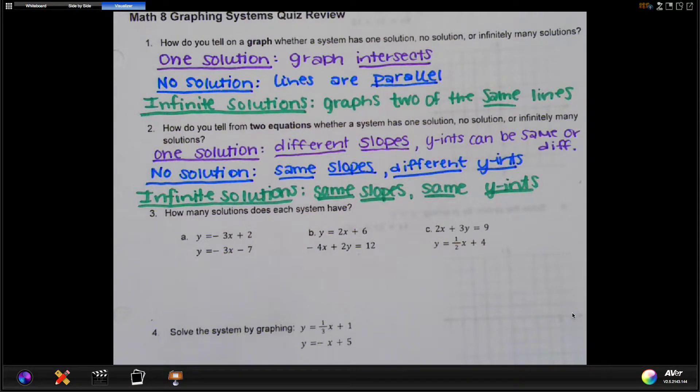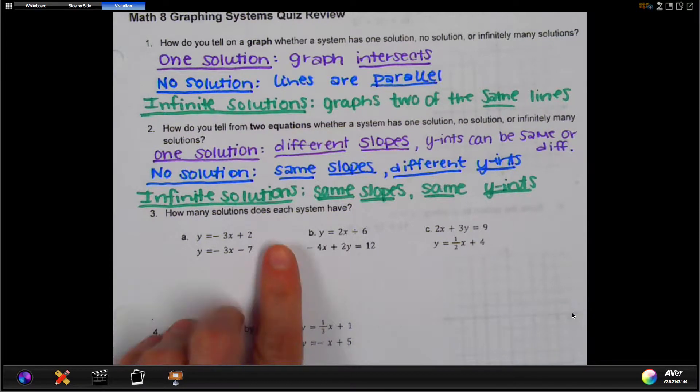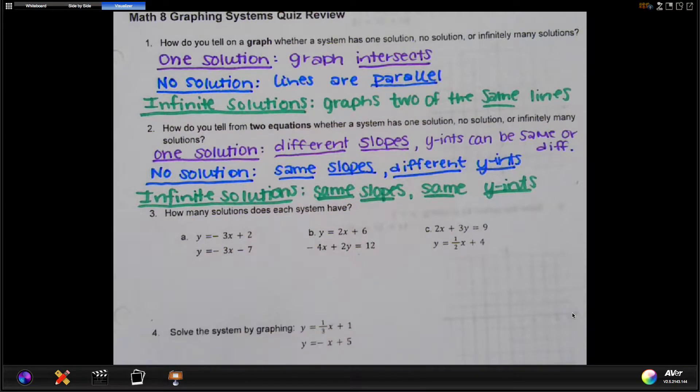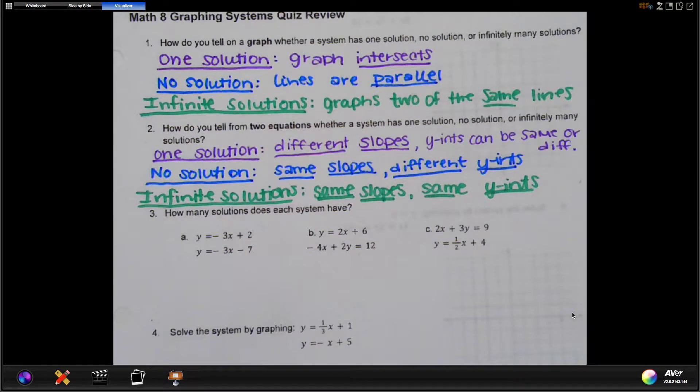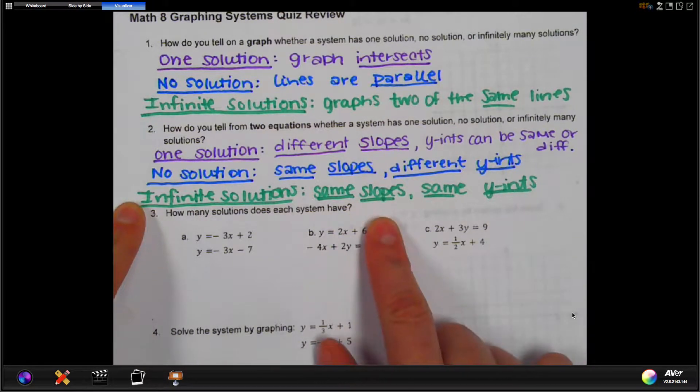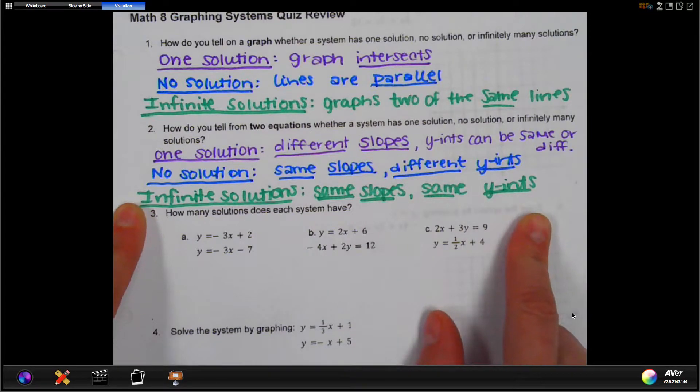How do you tell from two equations whether a system has one, no, or infinitely many solutions? It will have one solution if the slopes are different. Right away it has one solution. The y-intercepts then can be the same or they can be different. It really doesn't matter. It will have no solution if they have the same slope but different y-intercepts.